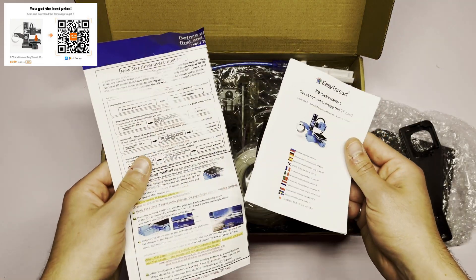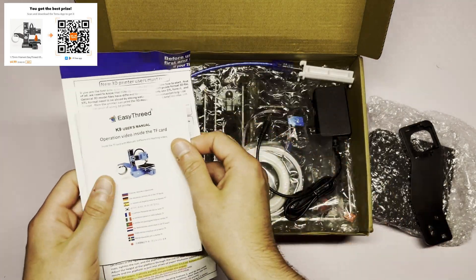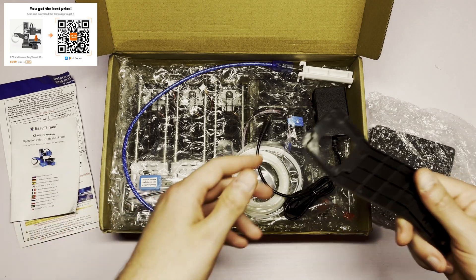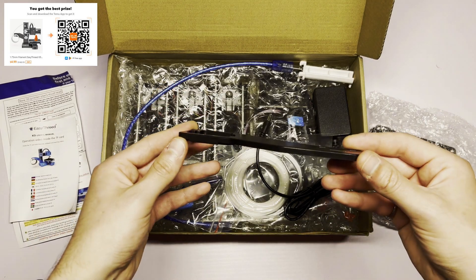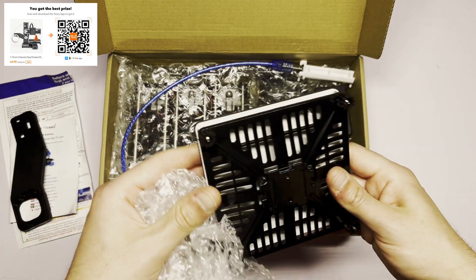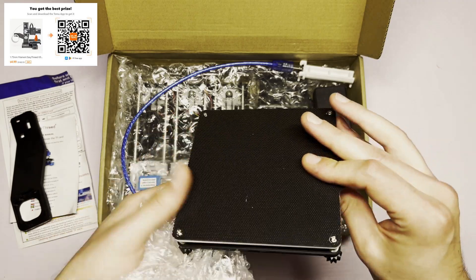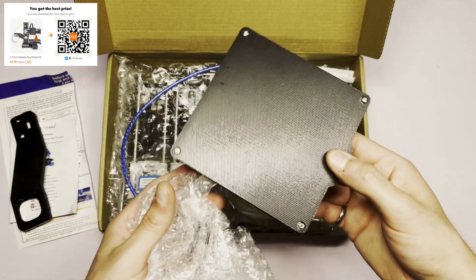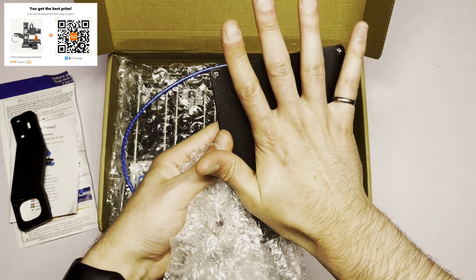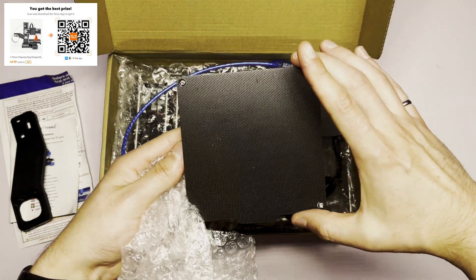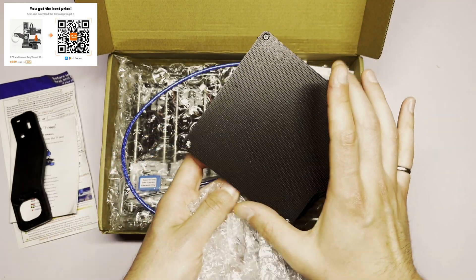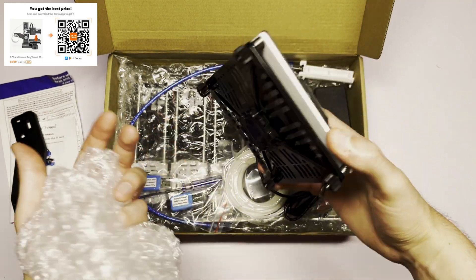Well, we've got some instructions, which are thankfully all in English. We've got part of the filament holder and this is the build plate, I think. Holy crap, that is small. It's literally smaller than my hand. We're talking like four by four inches, which I mean, makes sense. That's what it was listed for online.